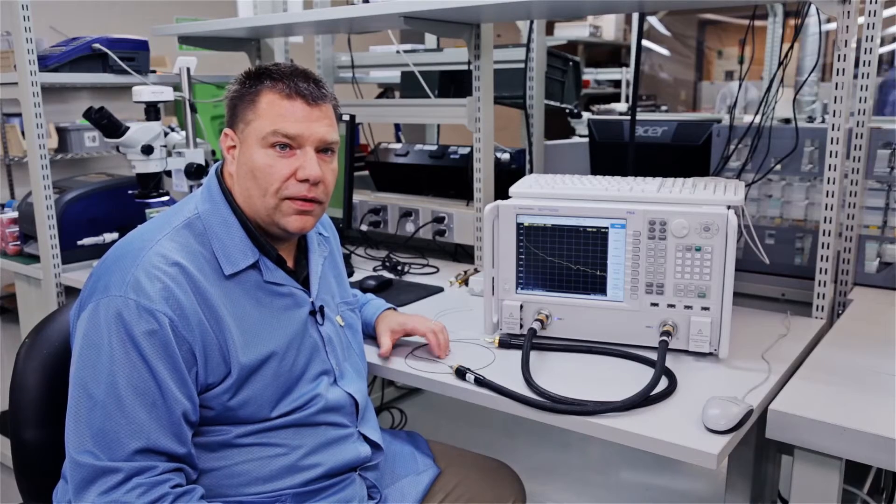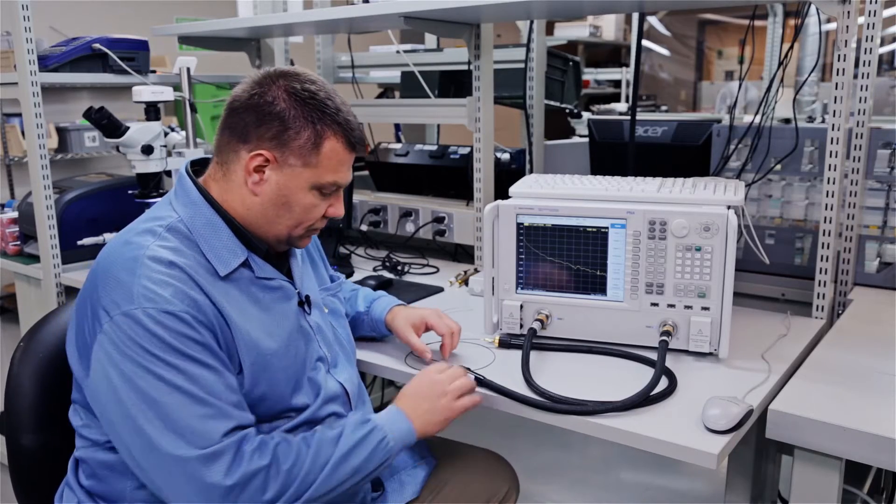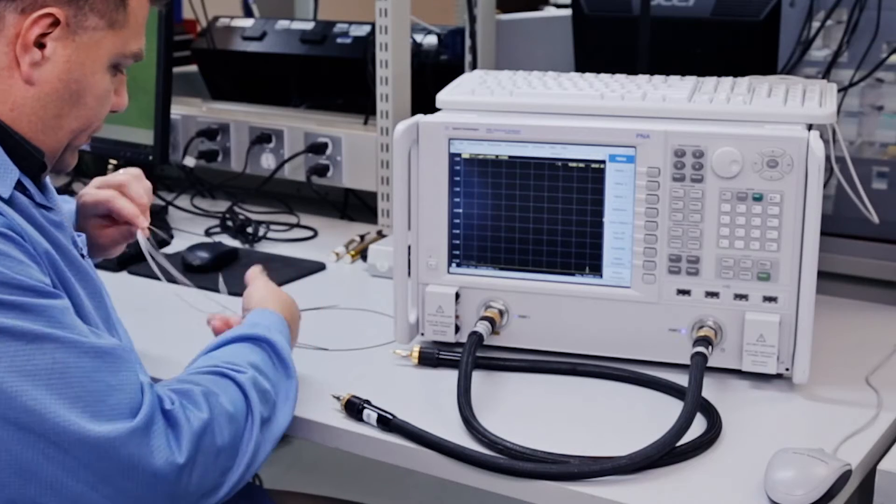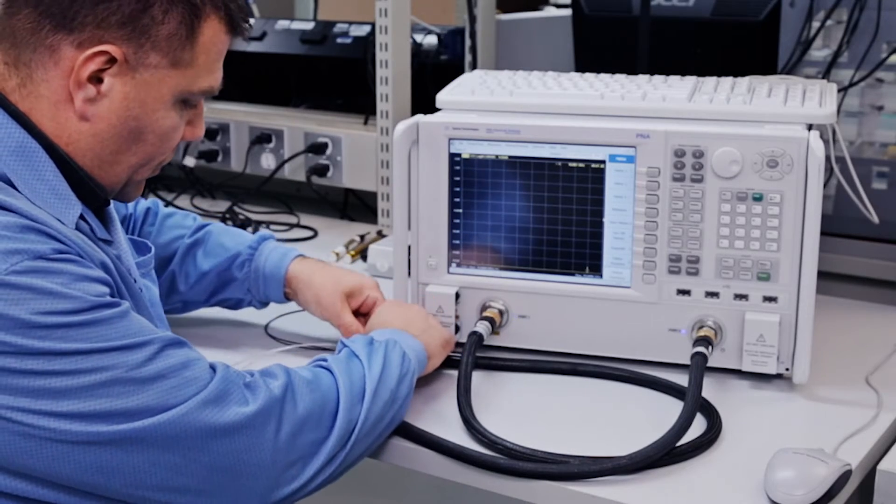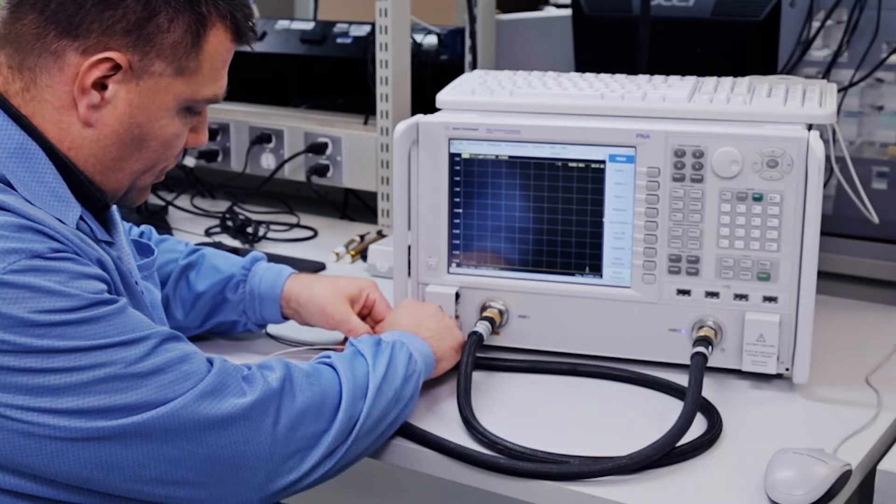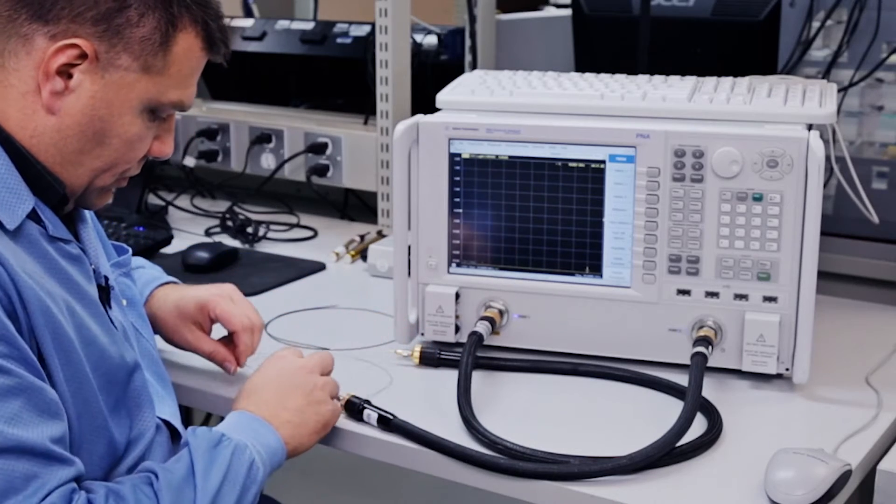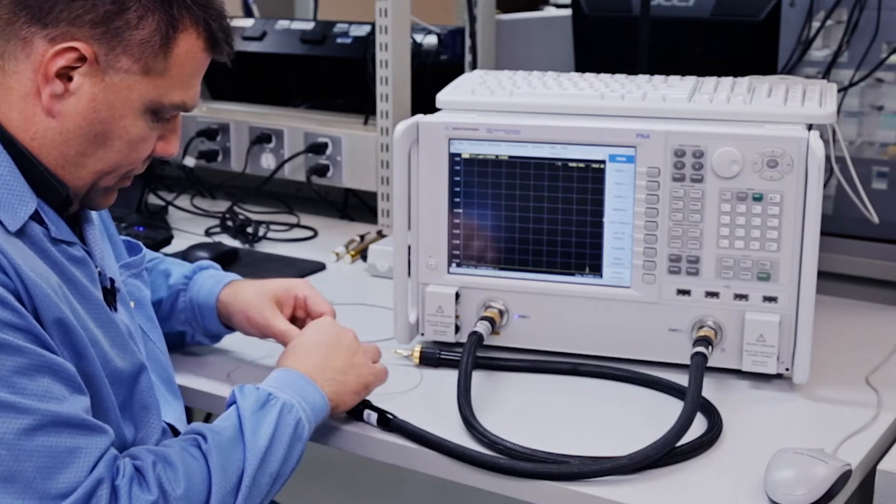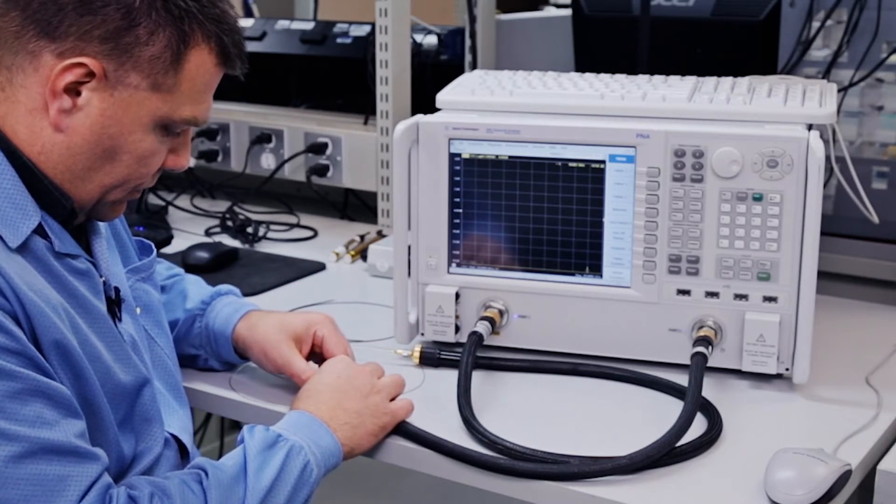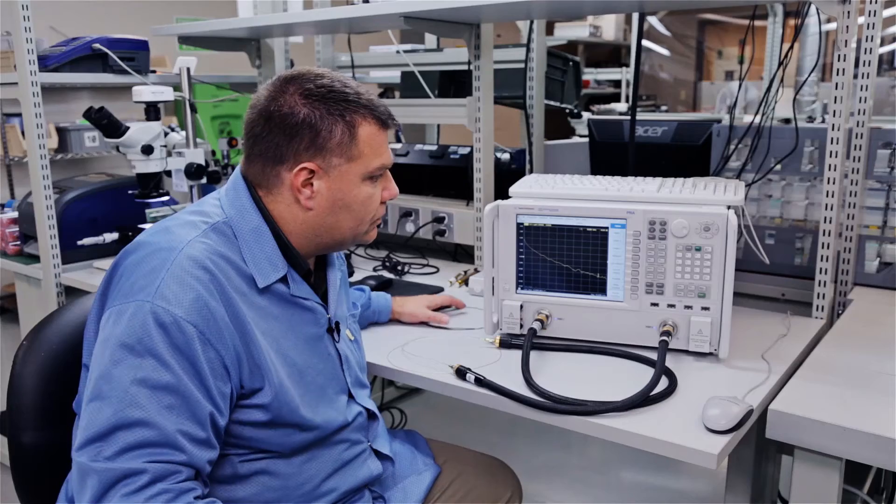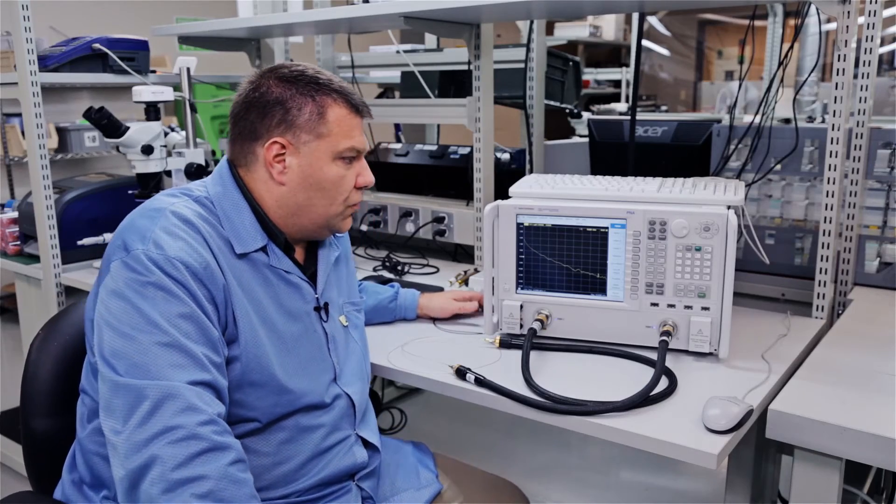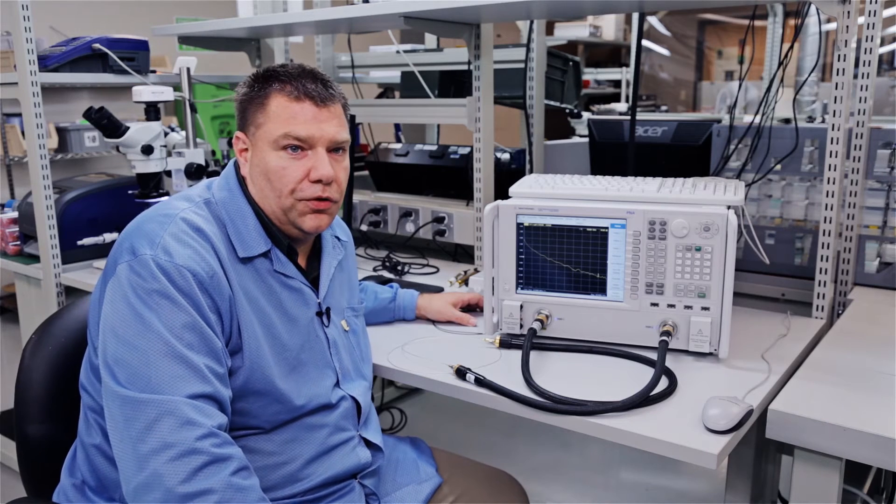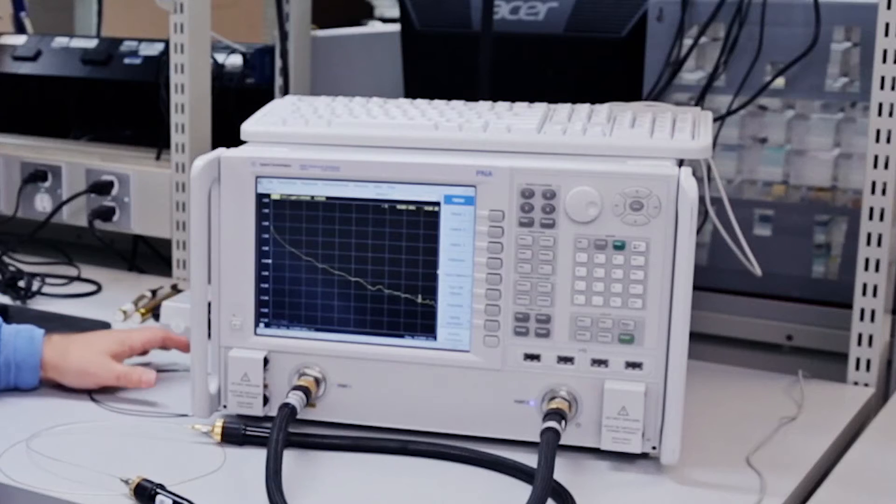Now we'll put on the expanded EPTFE dielectric. The loss curves are very similar between the two. This one's coming in right at minus 10.8 dBs.